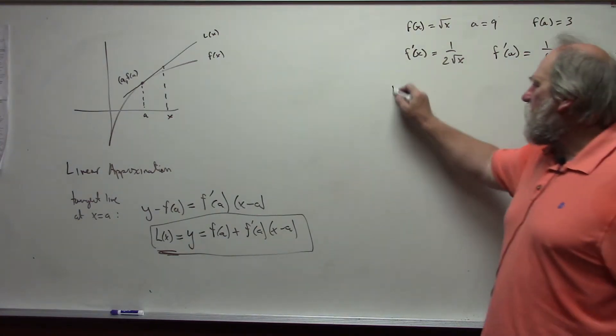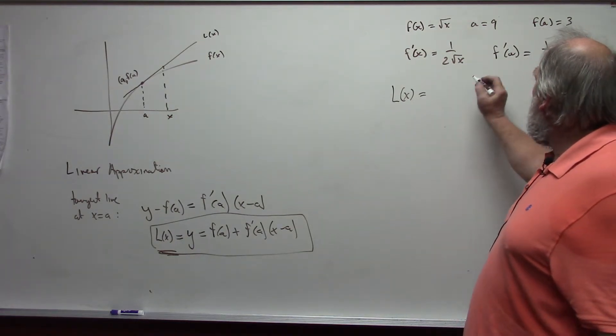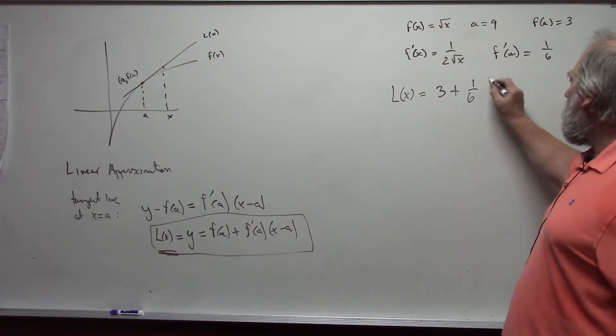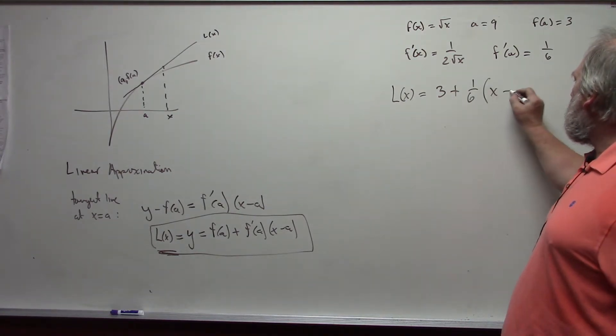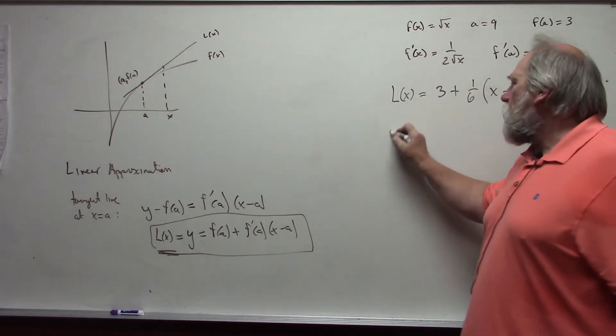And my L of x in this case would be f of a, three, plus f prime of a, one-sixth, times the quantity x minus three. And then if I want to use this to approximate the square root of 9.5, let's say...